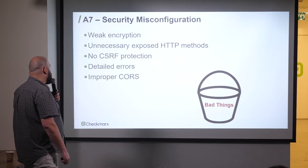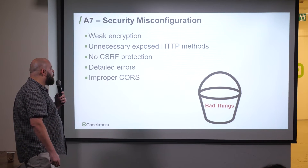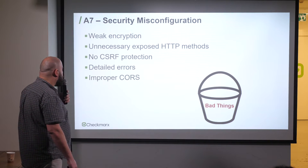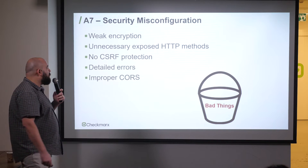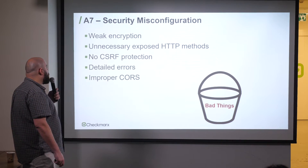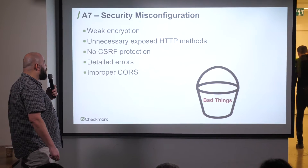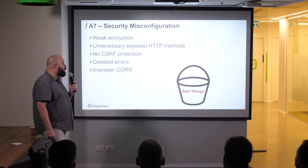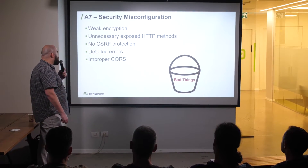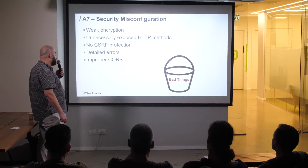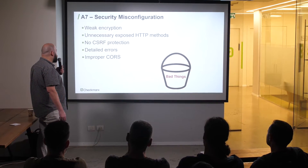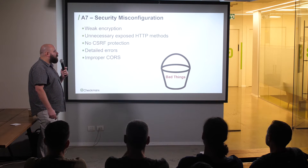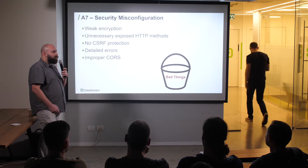A7 — Security Misconfiguration. This is a bucket of bad things — all the misfits that don't fit elsewhere but are really important: weak encryption, unnecessary exposed methods, forgotten CSRF protection, too many details in error messages, improper CORS. Everything somehow connected to misconfiguration.